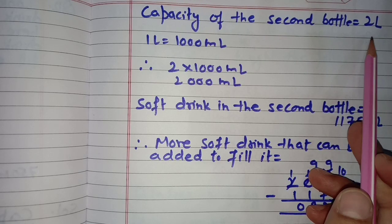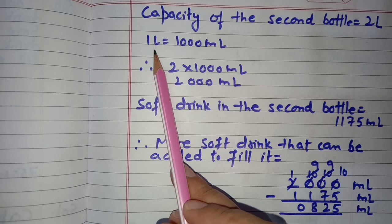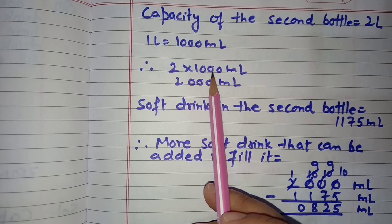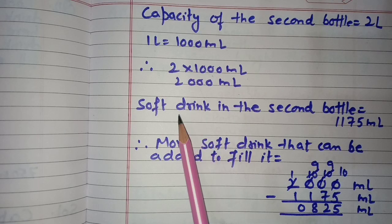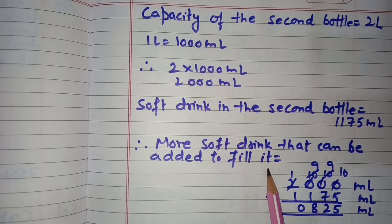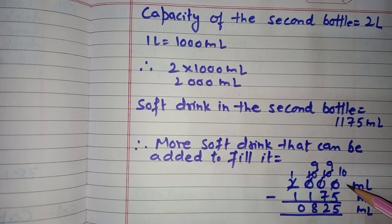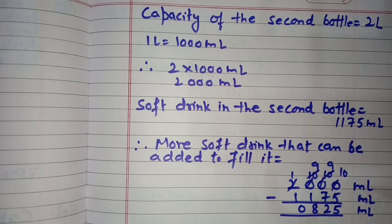For the second bottle, the capacity is also 2 litres, which equals 2,000 millilitres (1 litre equals 1,000 ml, so 2 times 1,000 equals 2,000 ml). The soft drink in the second bottle is 1,175 ml. The more soft drink that can be added is 2,000 minus 1,175, which equals 825 ml. So 825 ml more soft drink can be filled in the second bottle to make it 2,000 millilitres.